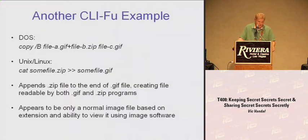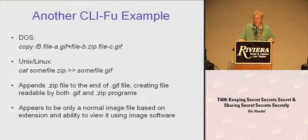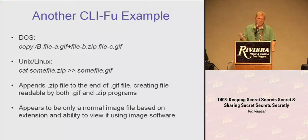Another example is where you append a zip file to a GIF file, ending up with a file that's readable both by zip programs and GIF image viewers. Because it has a .gif extension, by default you'll use an image viewer and see an image — meanwhile you could have a zip file embedded in it. The zip program will still open it, but you have to know the zip data is in there. It works because GIF information is stored in the file header and zip information is stored in the file footer.